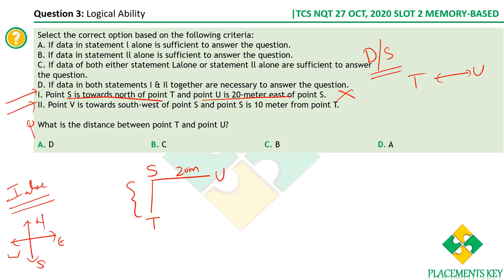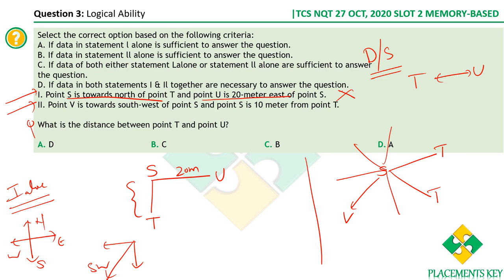From statement two alone: point V is to the southwest of point S, and point S is 10 meters from point T — but the direction of T from S is not specified, so T could be anywhere at a 10-meter distance. Also, there's no mention of U. Therefore statement two alone is also insufficient.